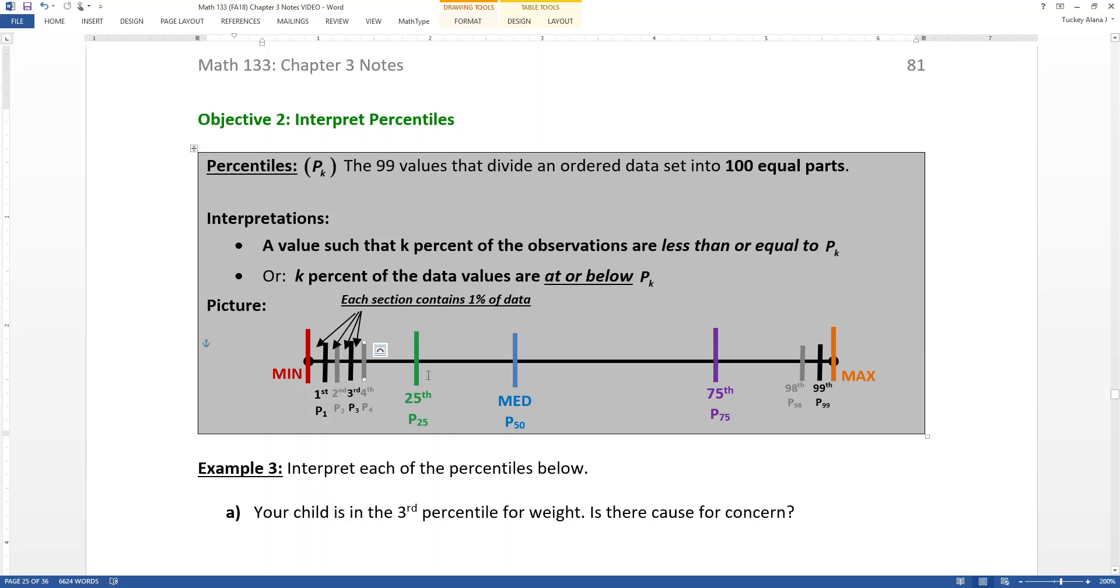Now there are a few very special percentiles that we'll look at a little bit more in a couple pages. Namely the 25th percentile, the green one right here. The 50th percentile, which we've actually already learned about, because the 50th percentile, by definition, is the median, which we learned about in section 3.1. Half the data is below, half the data is above, that's the median. And then the 75th percentile, which is P75. So those three are the most important percentiles. There's something special called quartiles, which we'll learn about in a little bit.